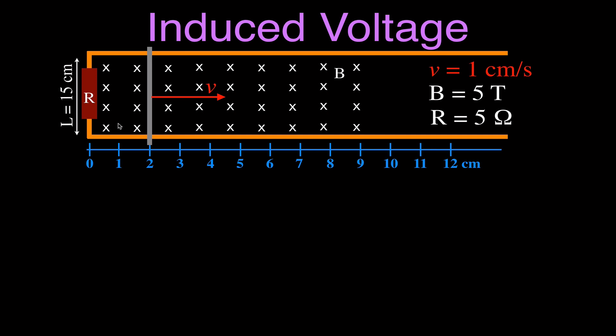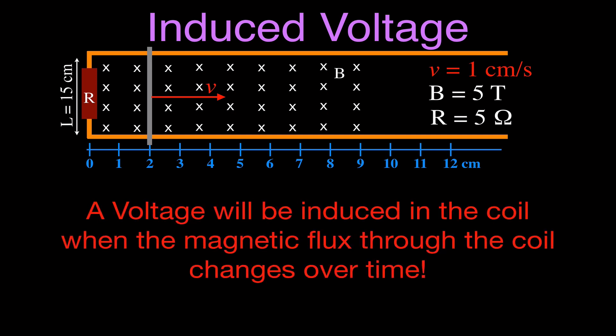15 centimeters. We have a magnetic field in here that's 5 Teslas, we have a resistor that's 5 ohms, and we are going to pull this bar across through this magnetic field, starting at 2 centimeters and moving to 12 centimeters at 1 centimeter a second, so it's going to take us 10 seconds to do that. And we want to know what is the induced voltage, or when will there be an induced voltage when we move that bar across and through that magnetic field.